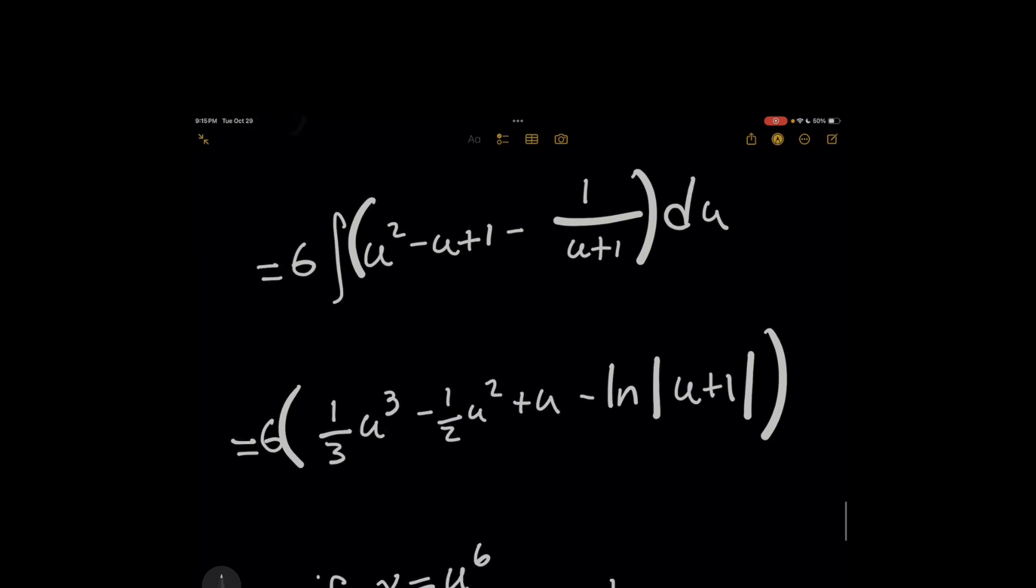So this is pretty simple. The integral of u squared is 1/3 u cubed minus 1/2 u squared after integrating the u term plus u. Now for 1 over u plus 1, you could do another u substitution. I would recommend using a different letter name because we already are using a u here.